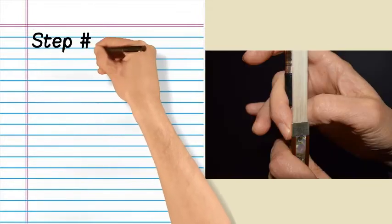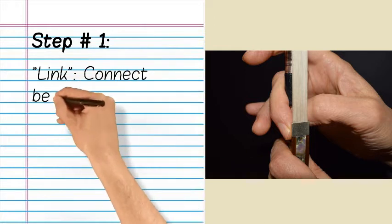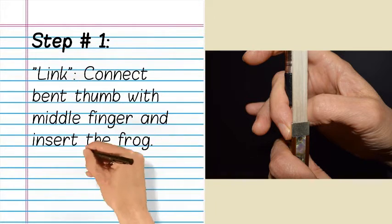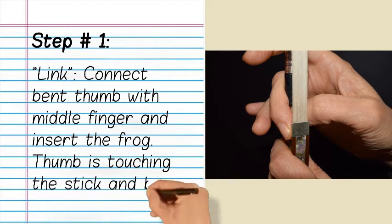Step number one: Link. Connect bent thumb with middle finger and insert the frog. Thumb is touching the stick and bow hair.